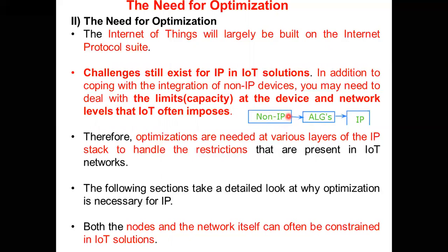But mostly in the IoT environment also, we want IP-based communication. What we can do is convert non-IP to IP-based. For that, in between we can use a device called ALG — the full form of ALG is Application Layer Gateway. Wherever the output is coming as a non-IP output, it has to be fed to an ALG device, and from that ALG device it is going to convert into IP. Because in the IoT environment, most of the time we want IPv6, that is why IP has to convert into IPv6.